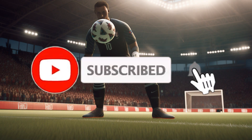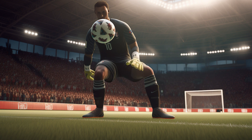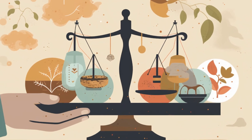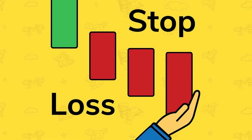Tip number one: use stop loss orders to minimize losses. One of the most important things to remember when trading options is to manage your risk, and one effective way to manage your risk is to use stop loss orders. A stop loss order is a type of trading order that automatically closes your position when the price of the underlying asset reaches a certain level. By setting a stop loss order, you can limit your potential losses and protect your investment.